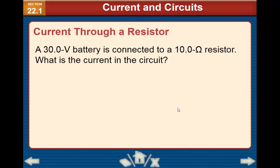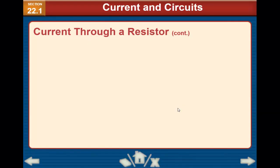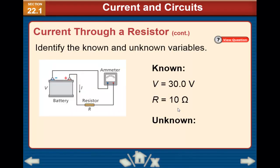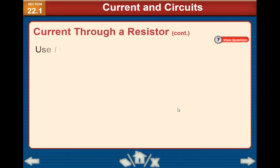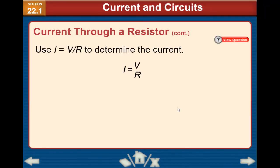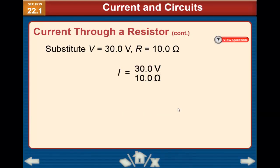For example, if a 30 volt battery is connected to a 10 ohm resistor, what is the current in the circuit? According to Ohm's Law, we have V and R, and the unknown is I. Using I equals V divided by R, the answer is 30 divided by 10, which equals 3 amperes.